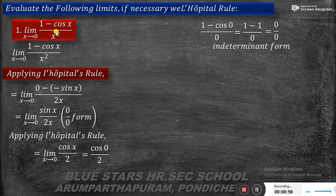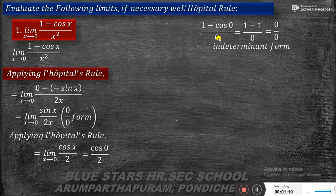We write the given limit: limit x tends to 0, (1 minus cos x) by x squared. Applying the limit means substituting x equal to 0: we get (1 minus cos 0) by 0 squared. Since cos 0 is 1, this gives (1 minus 1) by 0, which is 0 by 0 — an indeterminate form.